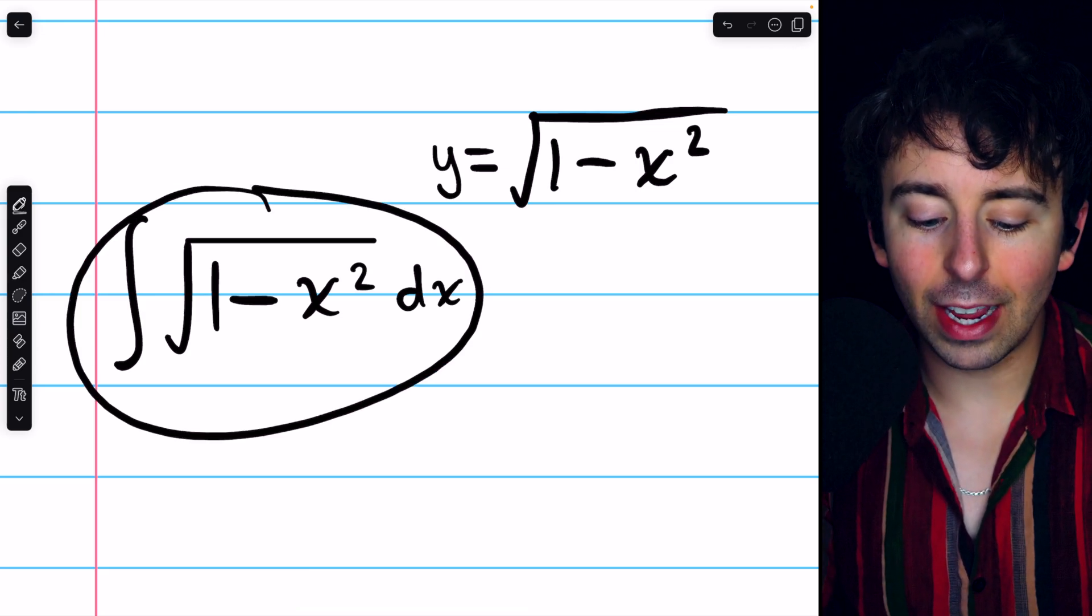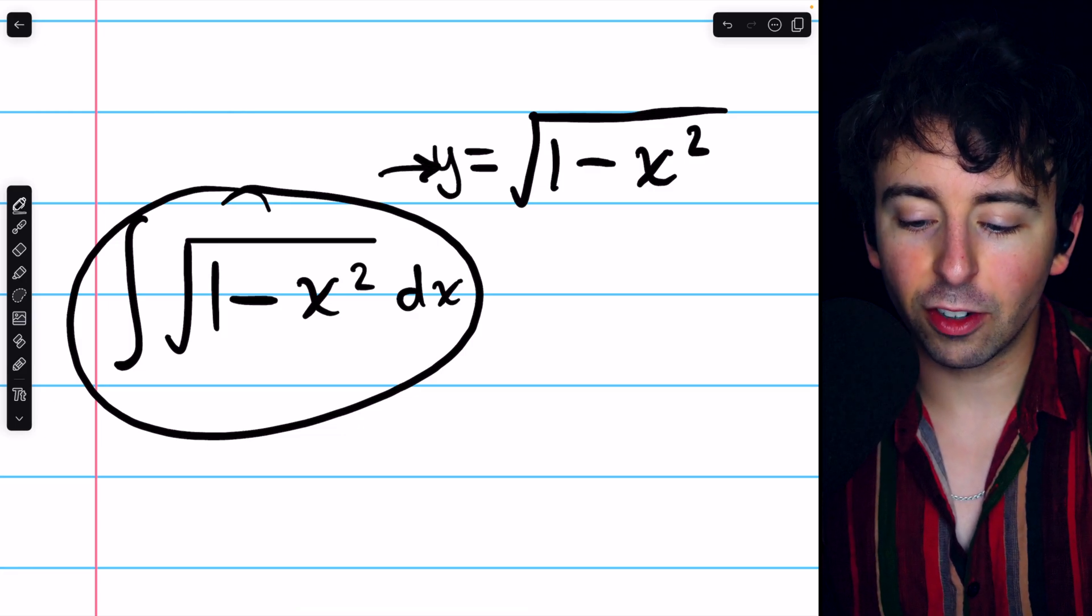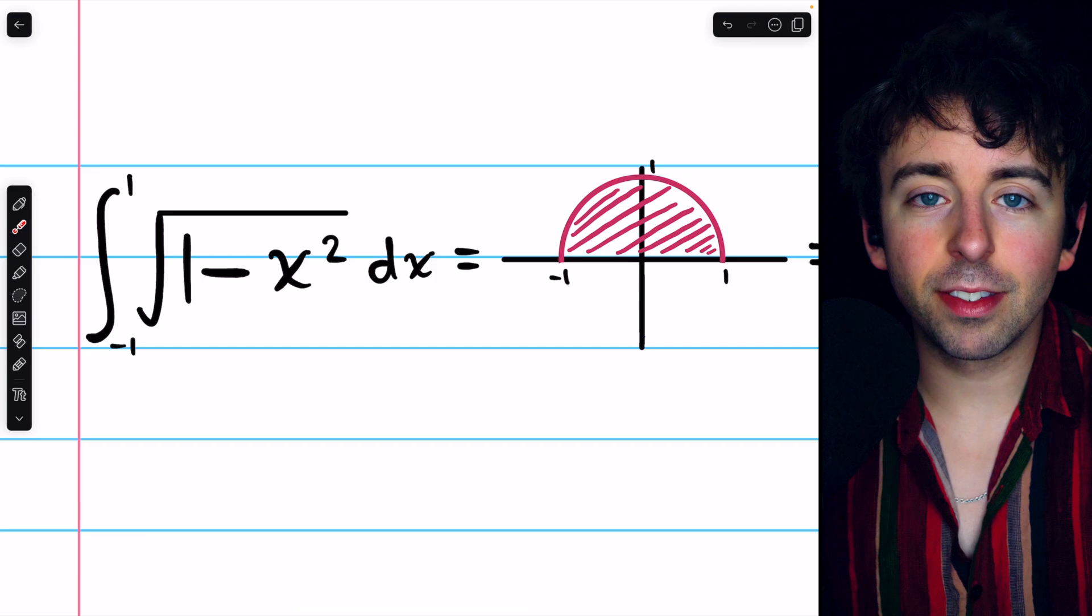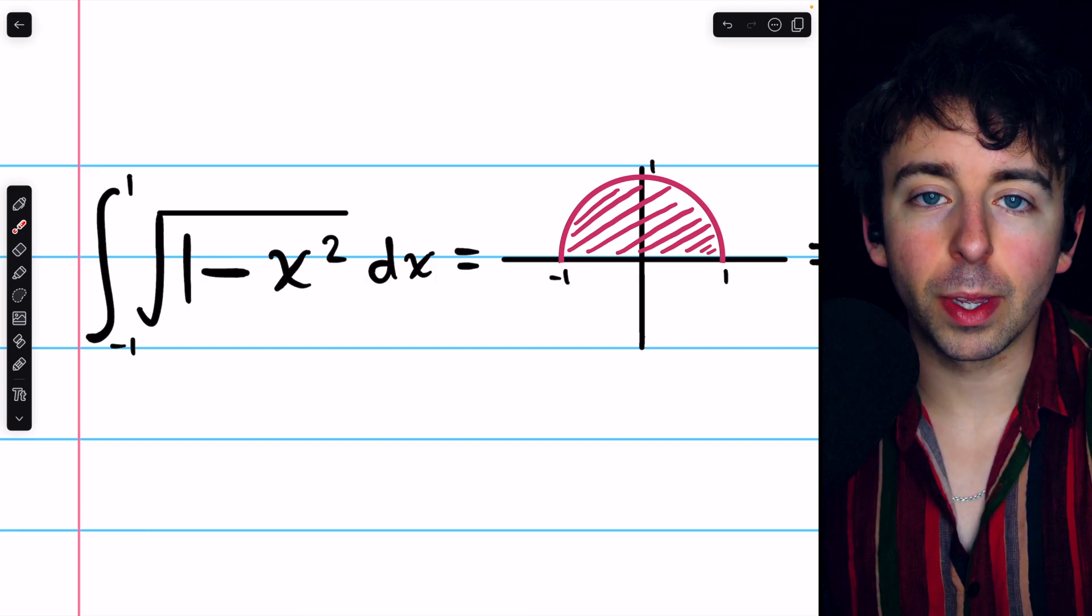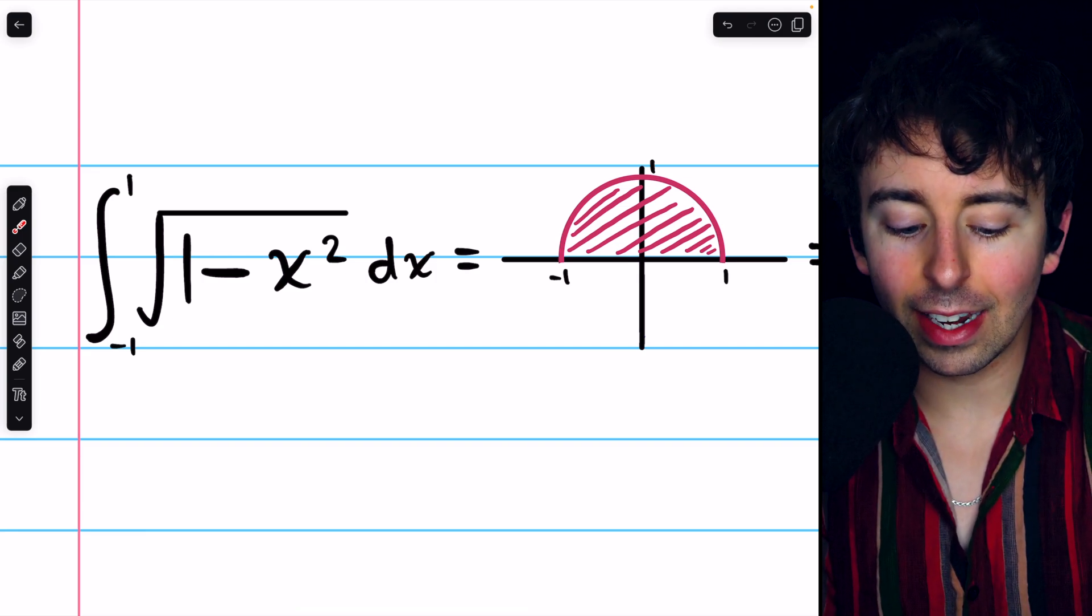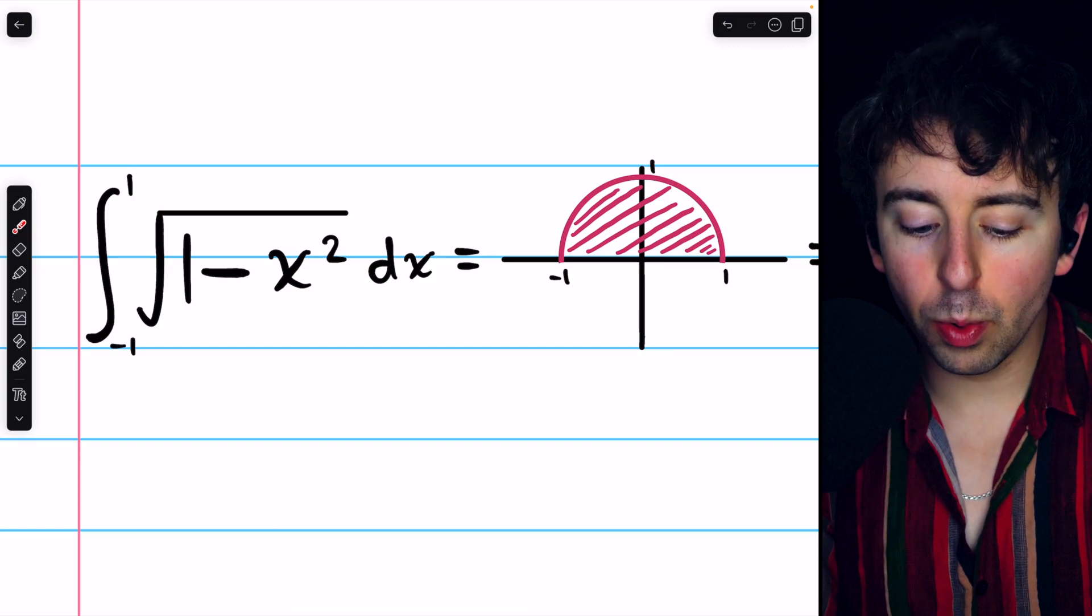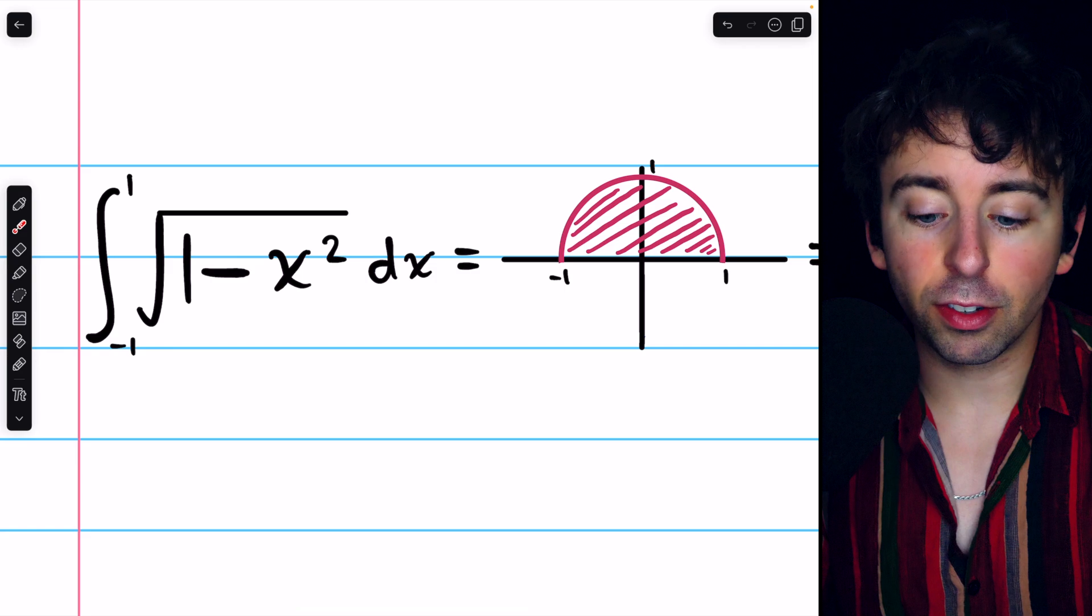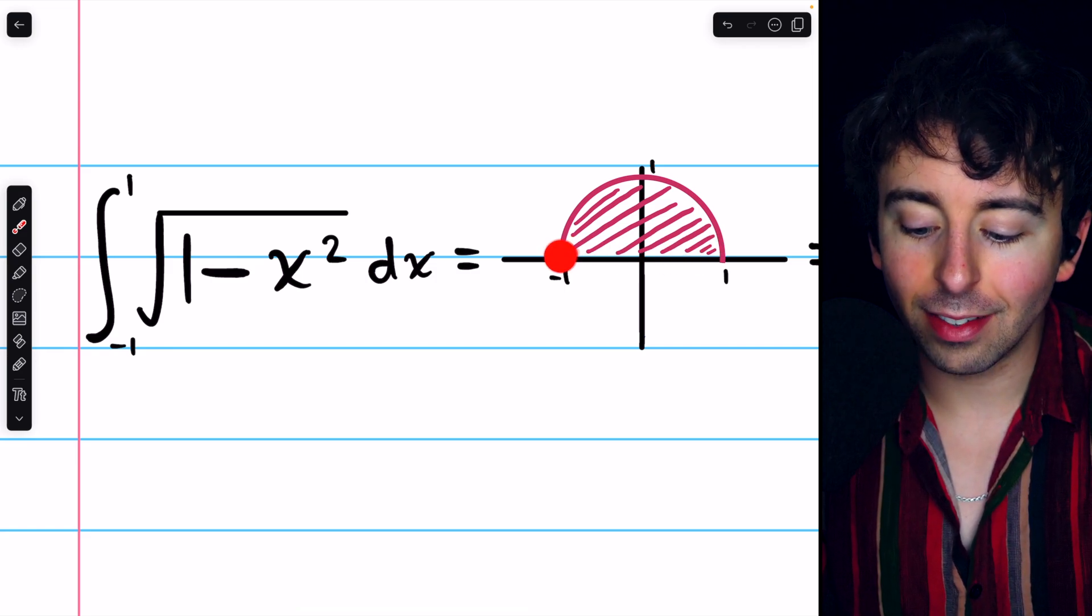Now, in the case of the indefinite integral, understanding this connection to the circle doesn't help us too much. But it's worth considering how easy this integral would be if we were doing the definite integral from negative 1 to 1. If we were integrating this from negative 1 to 1, well, that would just be the area under that semicircle.